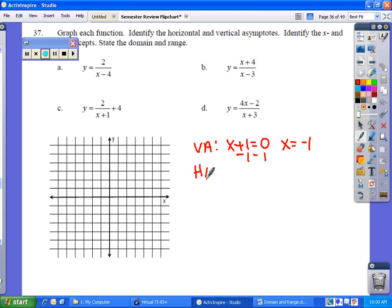Your horizontal asymptote will simply be this last number. So all you have to do is indicate that it's y equals four.